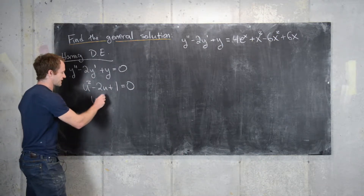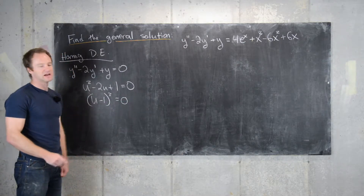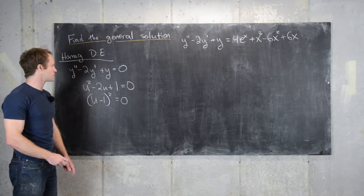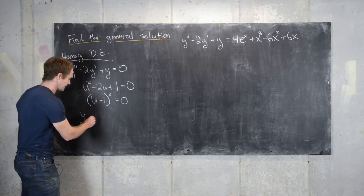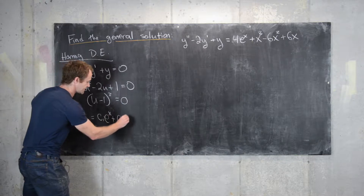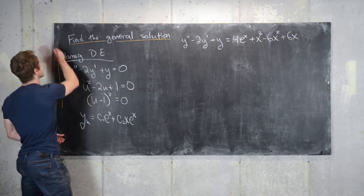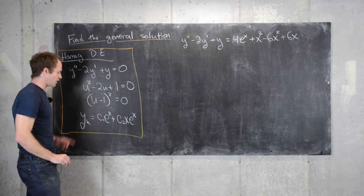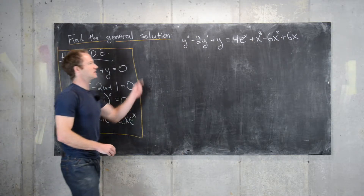The polynomial factors as (u - 1)² = 0, so we have a repeated root. Since 1 is a second-order root, the homogeneous solution is y_h = c1·e^x + c2·x·e^x. We'll hold on to this until the end.